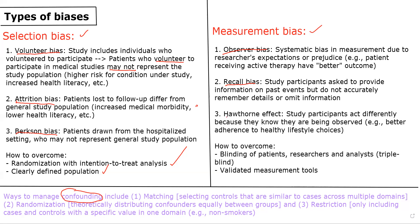The third type is the Hawthorne effect, which is when study participants act differently when they know they're being observed. This leads to measurement bias because patients' behavior won't accurately reflect their true baseline. For example, people who know they're being observed may be more likely to adhere to healthy lifestyle choices — eating well, sleeping well, exercising — which introduces bias in measuring their exposures and lifestyle factors at baseline.